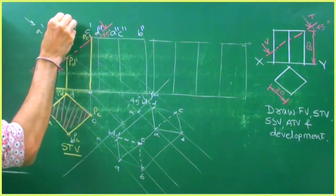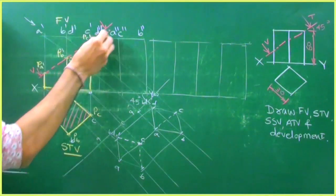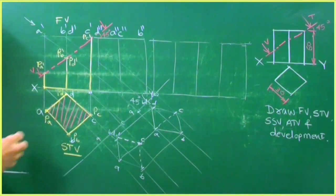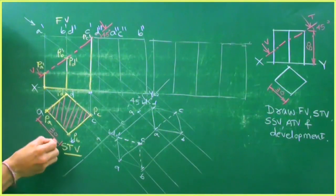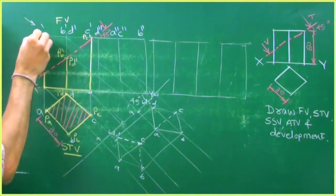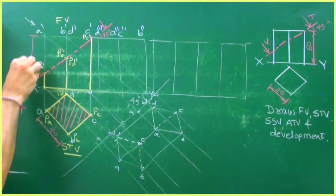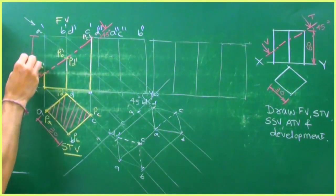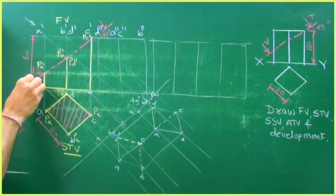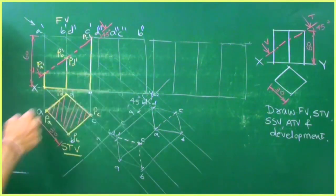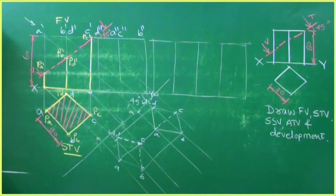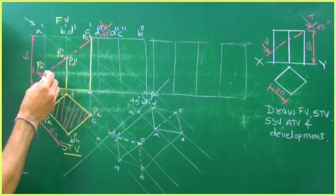This is the front view with dimensioning. This dimension is 30 and this is 60. Now we'll see the side view.